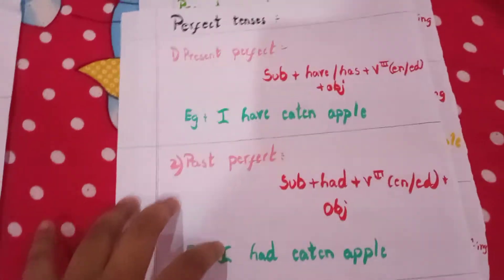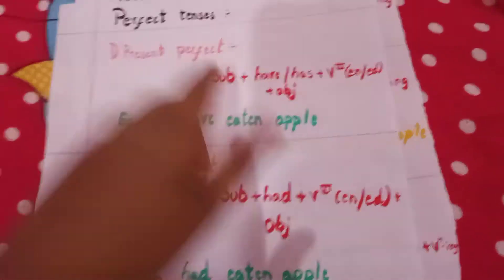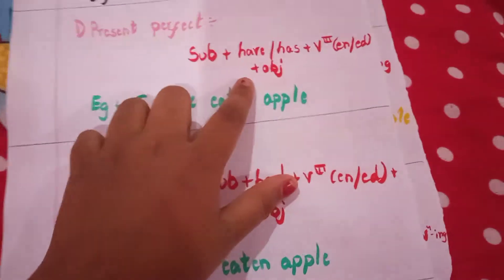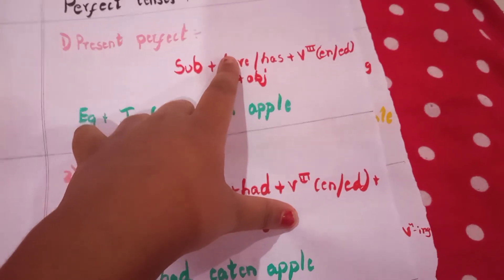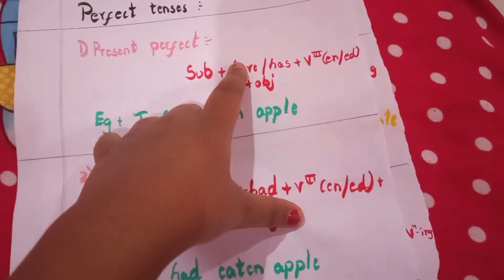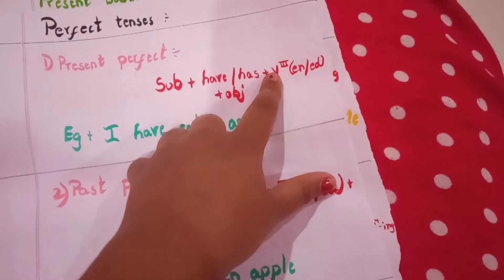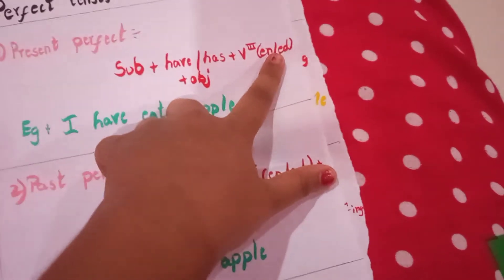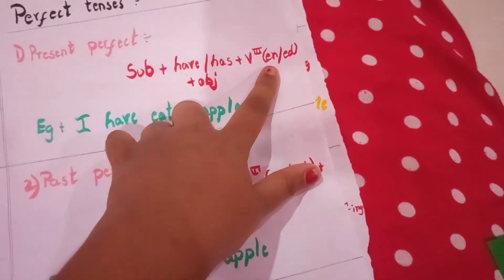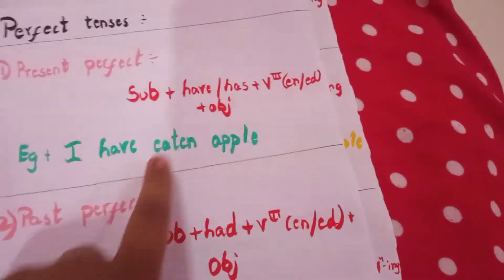Now let's go to perfect tense — present perfect. The formula is subject plus have or has plus V3 plus object. We use 'have' for I, you, we, they; and 'has' for he, she, it. V3 means we add '-en' or '-ed' to the verb. For example, the verb 'eat' becomes 'eaten'. Example: 'I have eaten apple.'